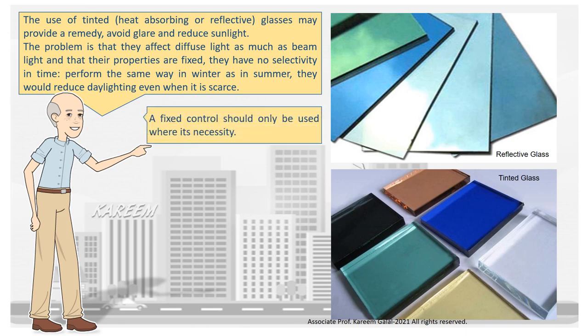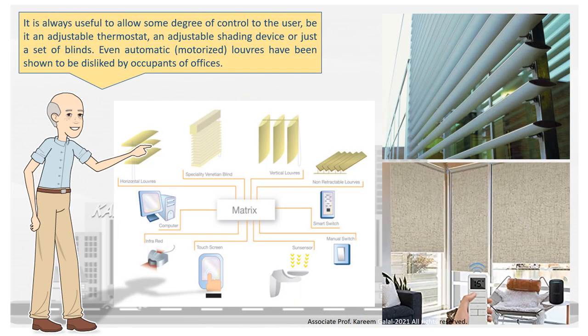A fixed control should only be used where it is a necessity. It is always useful to allow some degree of control to the user — be it an adjustable thermostat, an adjustable shading device, or just a set of blinds. Even automatic, motorized louvres have been shown to be disliked by occupants of offices.